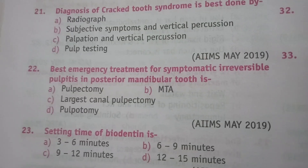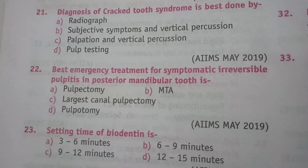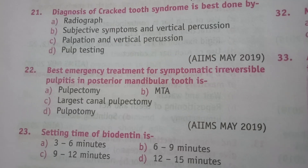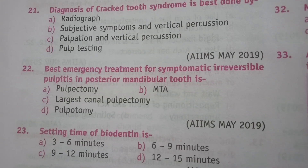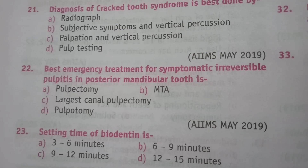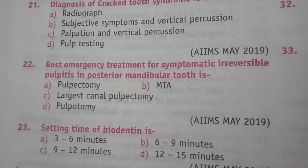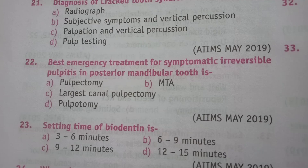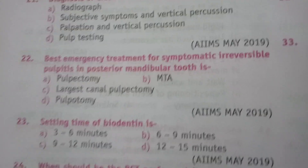Question 22: best emergency treatment for symptomatic irreversible pulpitis in a posterior mandibular tooth is — pulpectomy; MTA; largest canal pulpectomy; or pulpotomy. The answer is D, pulpotomy.